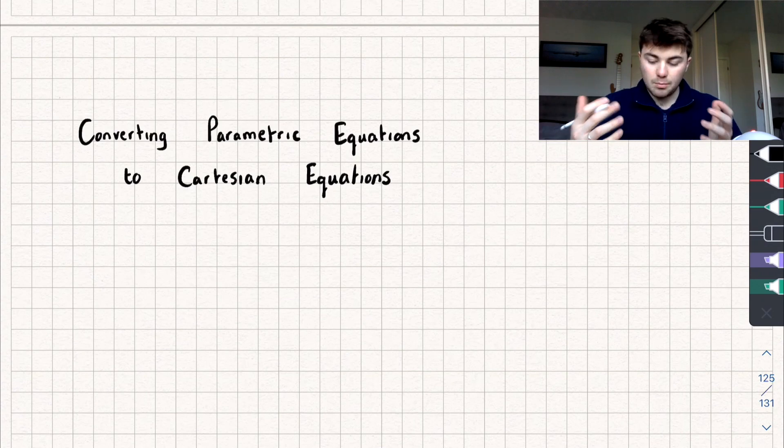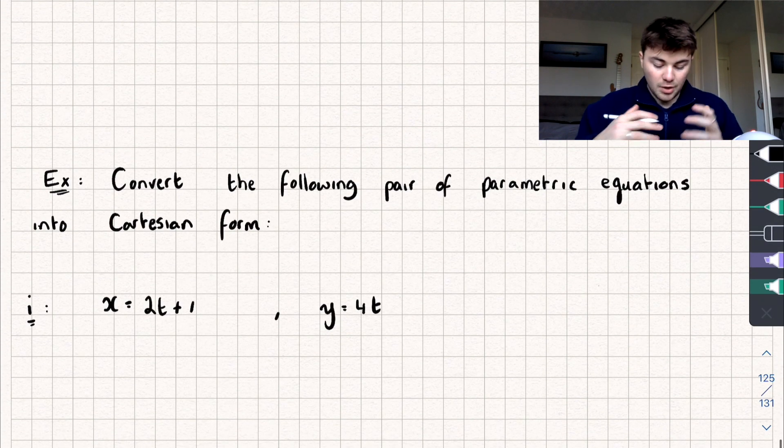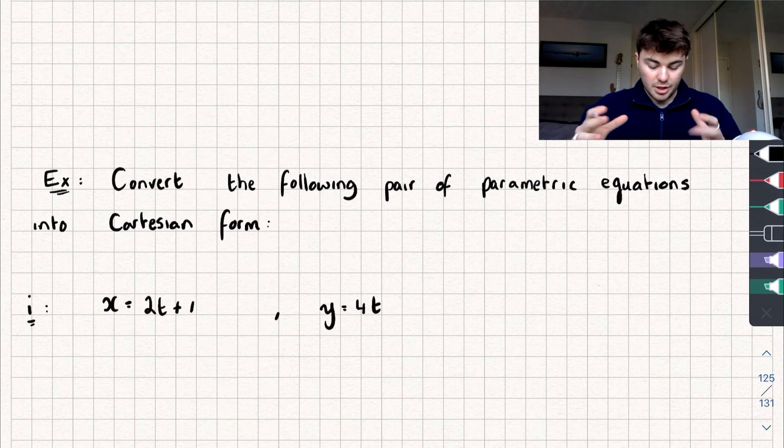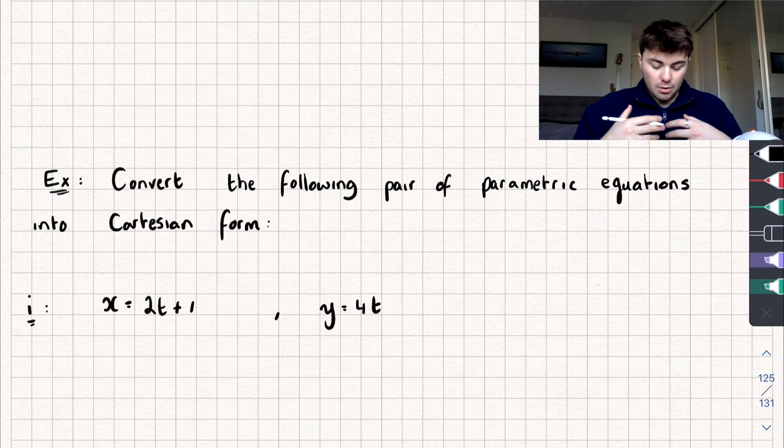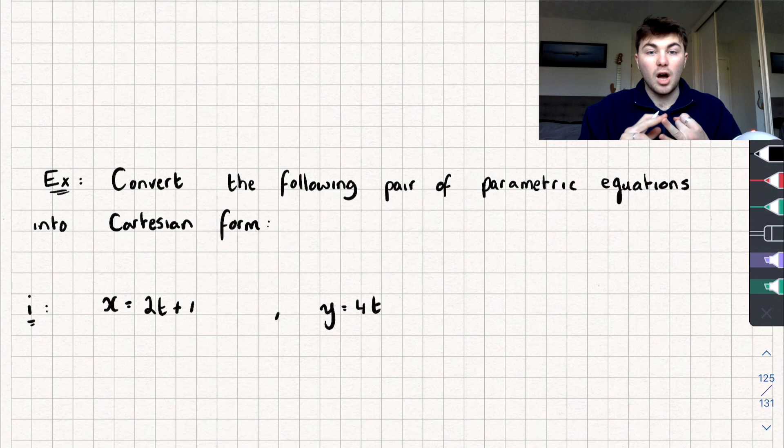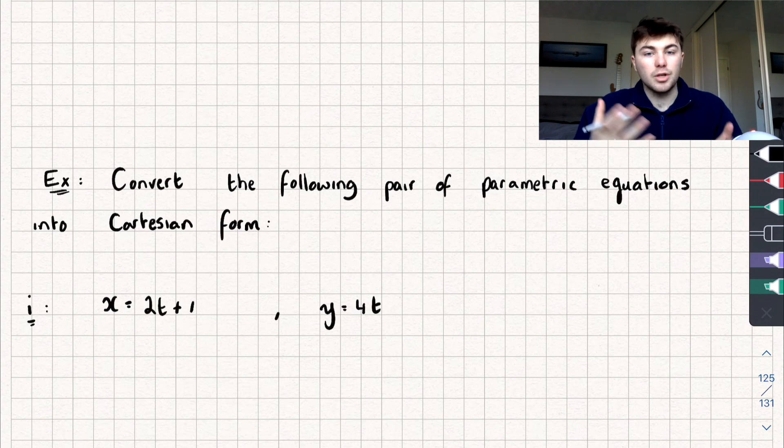We'll start off with the most simple case. So we have to convert the pair of parametric equations, x equals 2t plus 1 and y equals 4t, into a Cartesian equation form. If we think about the Cartesian equation, it's just an equation in terms of x and y. There's no parameter in there. So what we're going to want to do is eliminate the parameter from our equations, which is actually pretty straightforward to do.